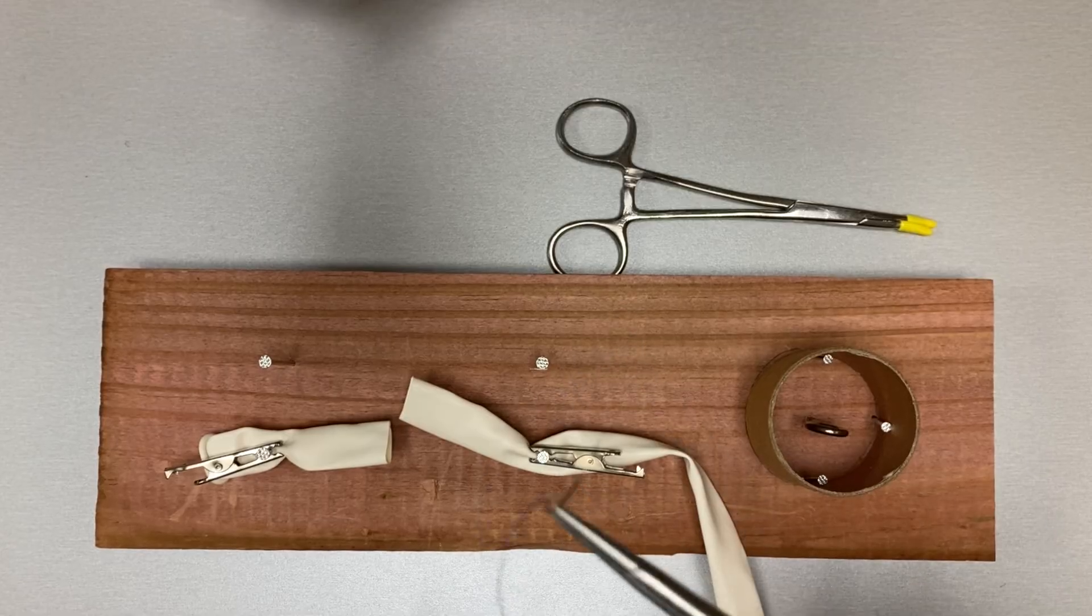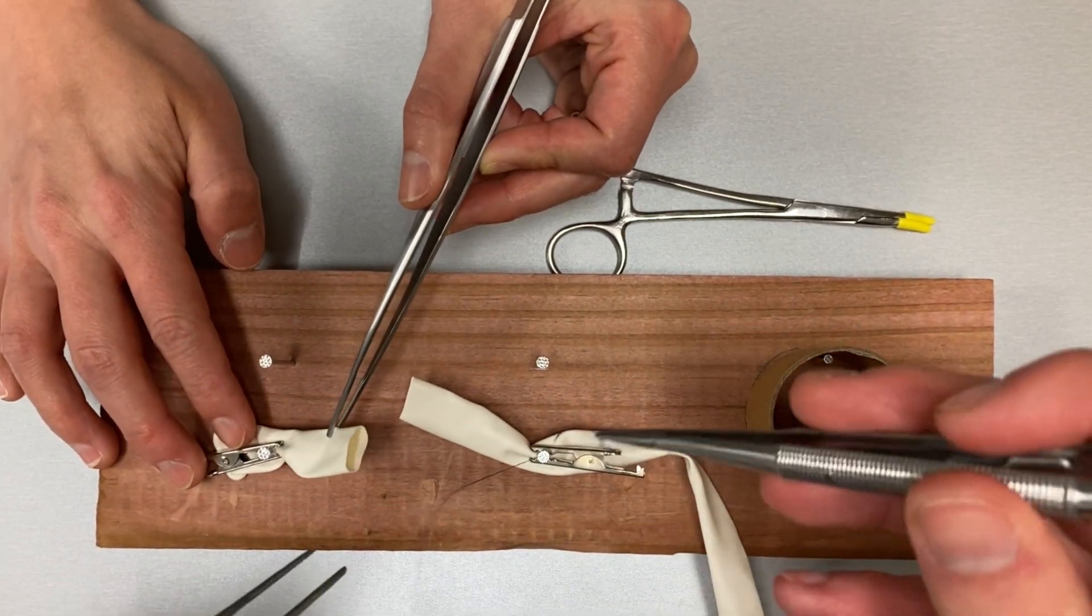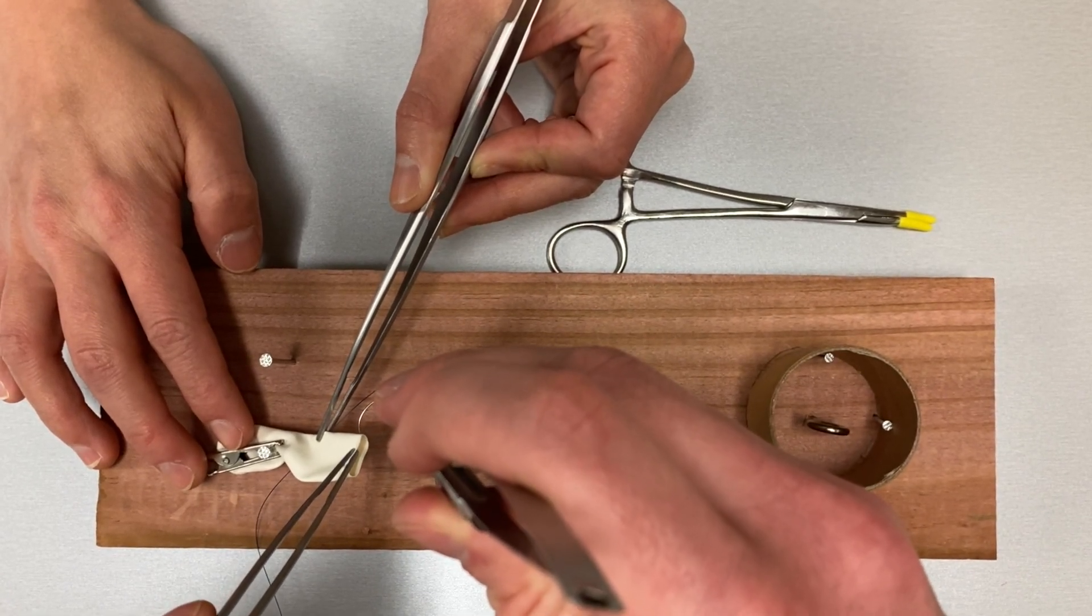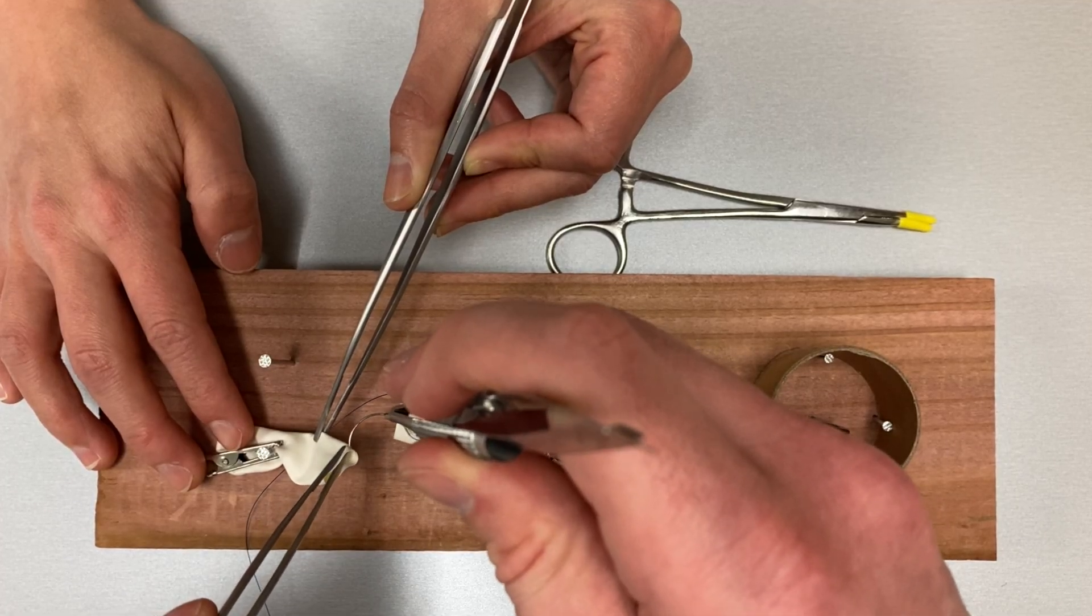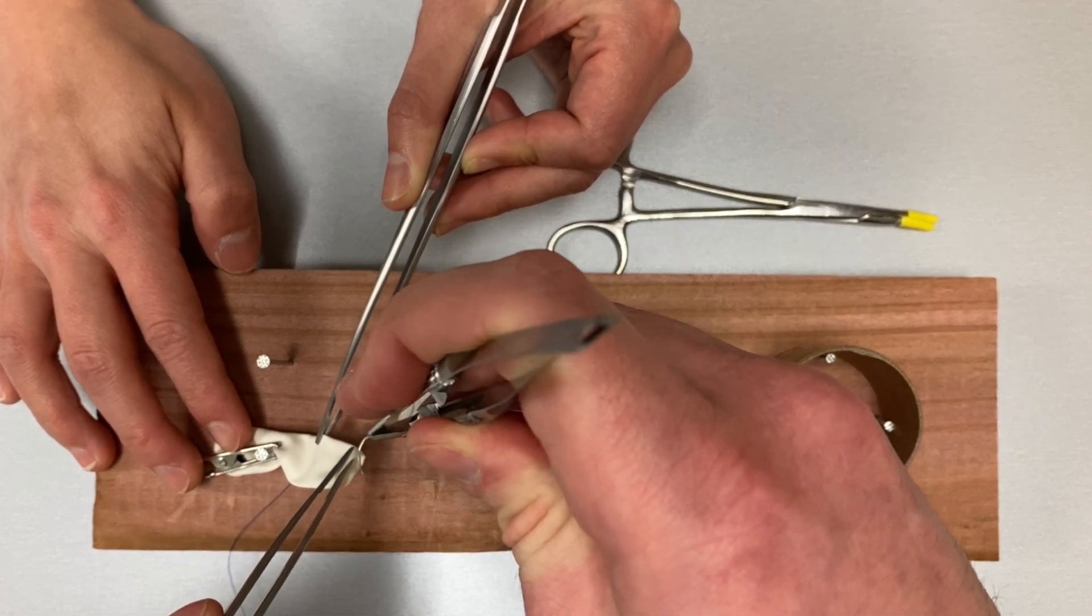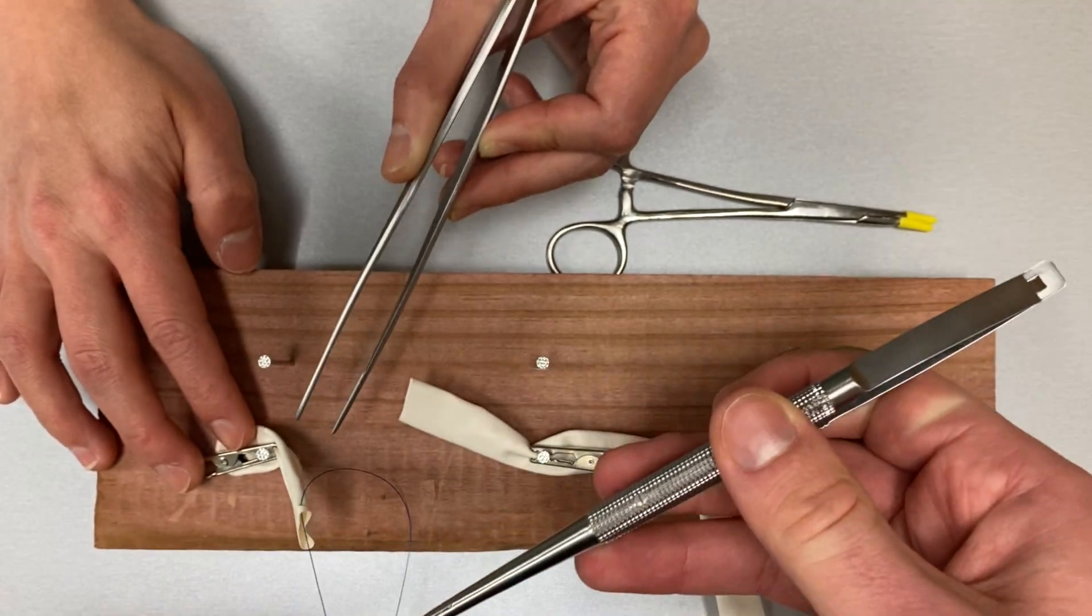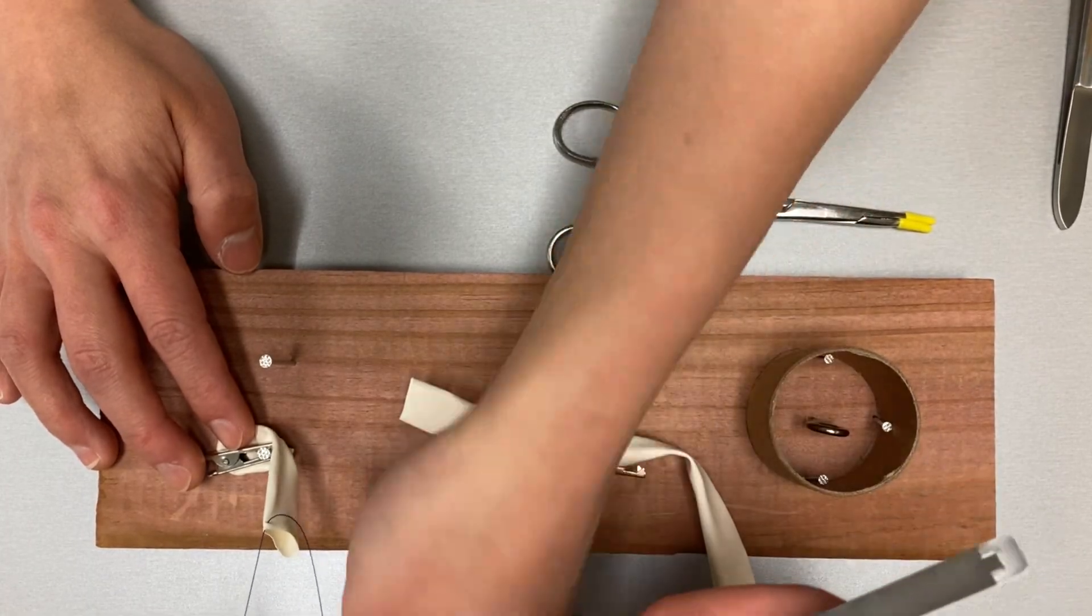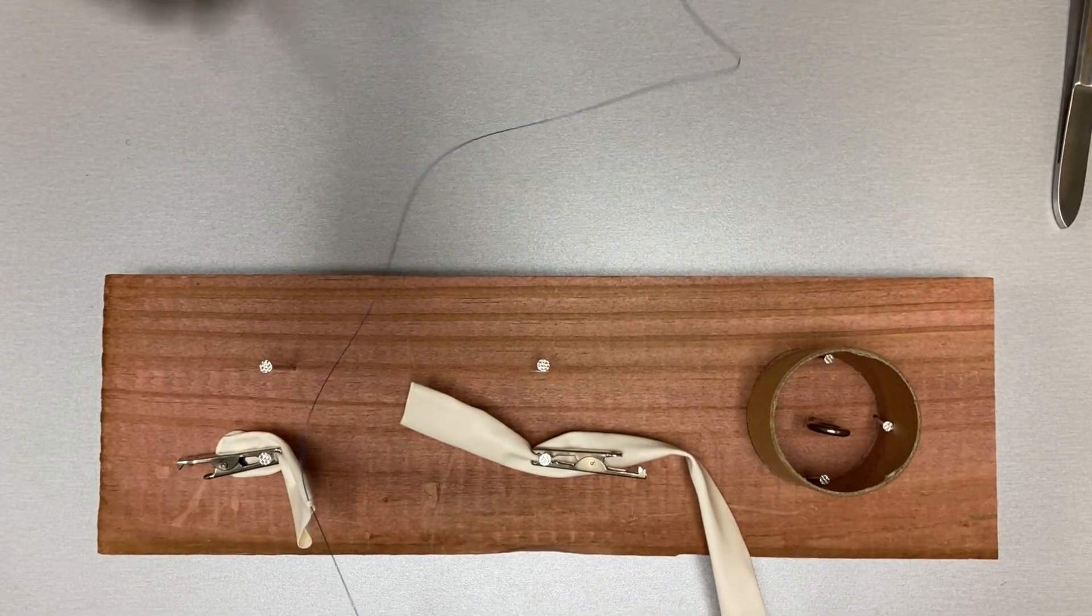Begin by loading the needle backhand. Starting with the vessel end to the operator's left, place your first suture bite at the 3 o'clock position from outside in. Reload the needle backhand, pull the suture through to half its length, and have your assistant shod the opposite tail.